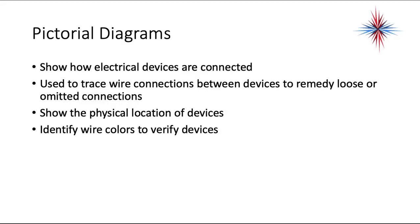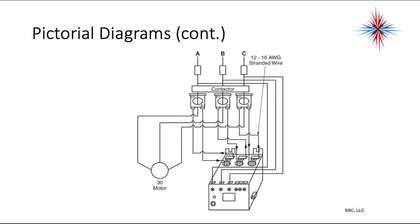Starting with pictorial diagrams — they show how electrical devices are connected. We use them to trace wire connections between devices, to remedy loose or omitted connections, or to rewire systems. They show us the physical location of the devices and identify wire colors to various devices. In a pictorial diagram, you can actually see each device, where the connections are, how the wire runs, and what type of wire needs to be run.